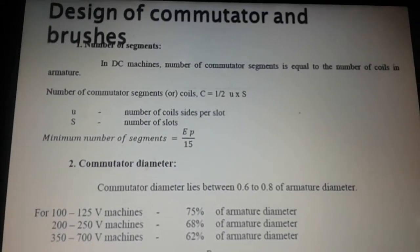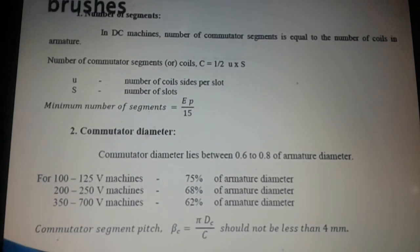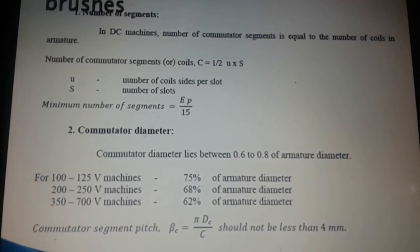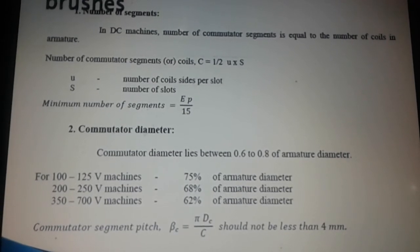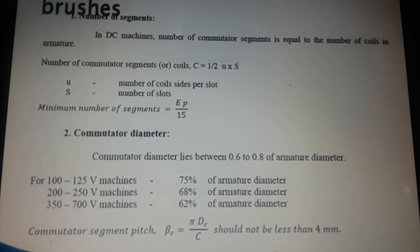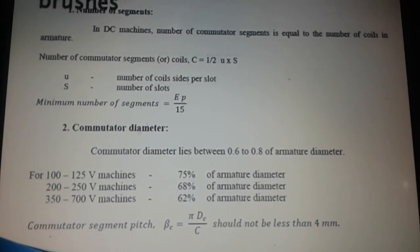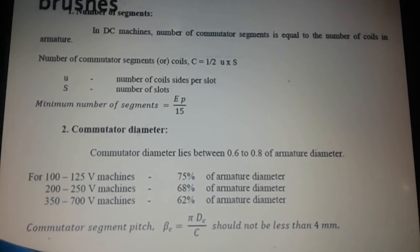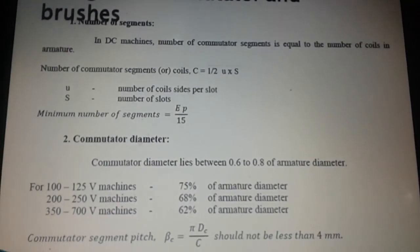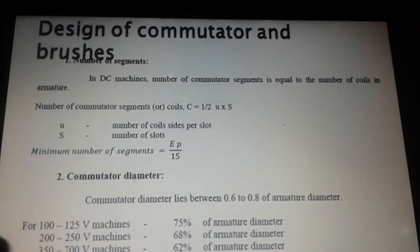Commutator diameter: The diameter of the commutator lies between 0.6 to 0.8 of armature diameter. The diameter of the commutator depends on the rating of voltage in the machine. For 100 to 125 volt machines, it is 75% of armature diameter.